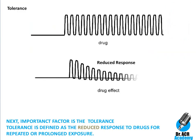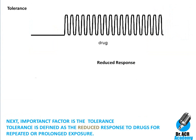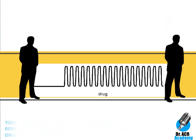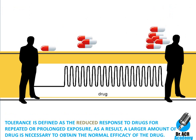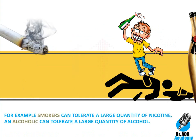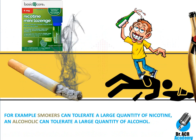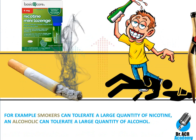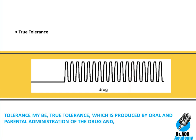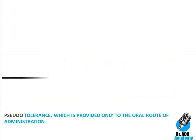The next important factor is tolerance. Tolerance is defined as the reduced response to drugs after repeated or prolonged exposure. As a result, a larger amount of drug is necessary to obtain the normal efficacy. For example, smokers can tolerate a large quantity of nicotine, and an alcoholic can tolerate a large quantity of alcohol. Tolerance may be true tolerance, produced by oral and parenteral administration of the drug, or pseudo-tolerance, which is provided only by the oral route of administration.